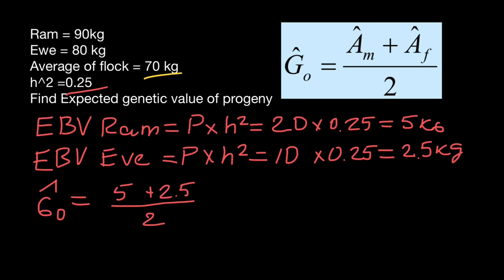and divided by 2, so the average. And this is going to be 3.75 kilograms. 3.75 kilograms is the expected genetic value of the offspring.